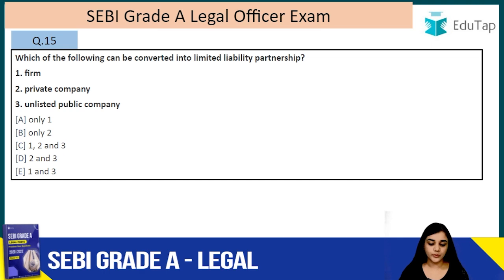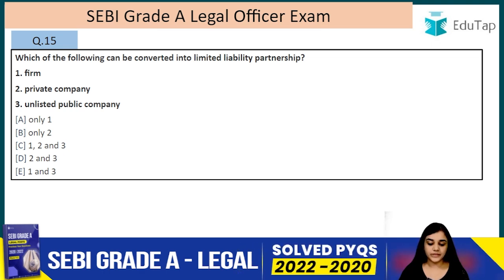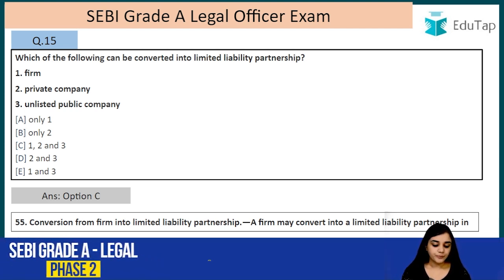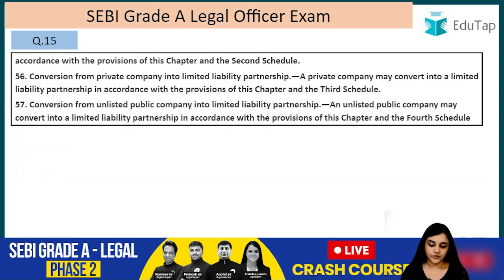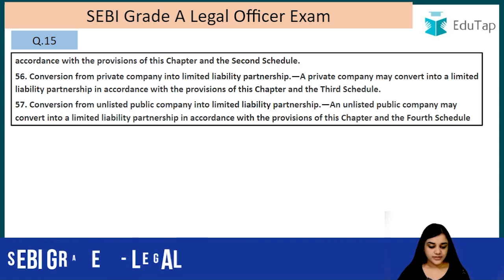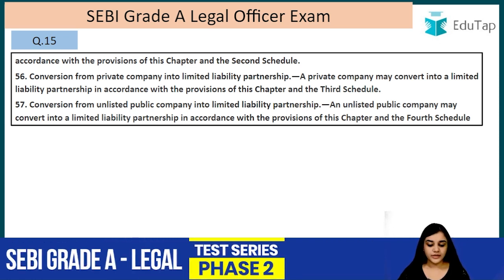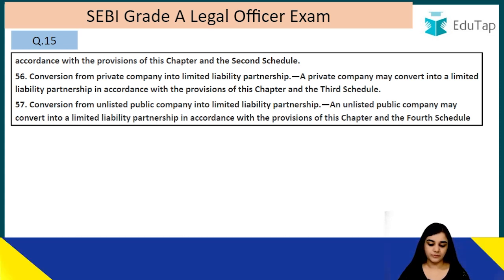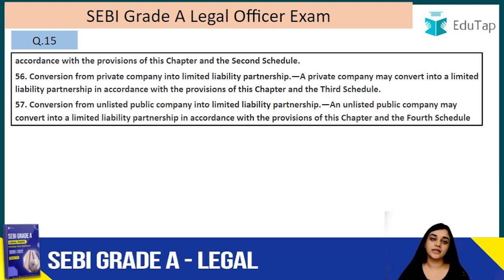Question number fifteen: which of the following can be converted into LLP — firm, private company, unlisted public company? The answer is all of the above, that is C. Section 55: a firm may convert into a limited liability partnership in accordance with the provisions of this chapter and the Second Schedule. Section 56: a private company may convert into a limited liability partnership in accordance with the Third Schedule. Section 57: an unlisted public company may convert into a limited liability partnership in accordance with the Fourth Schedule.